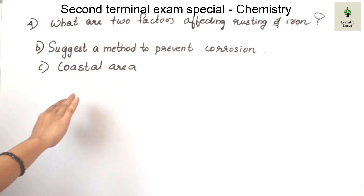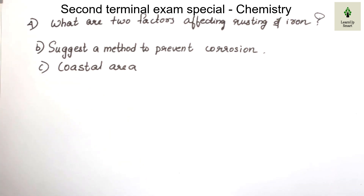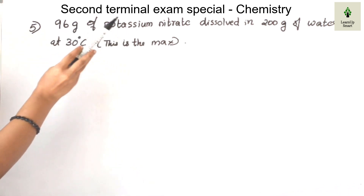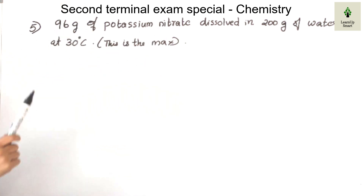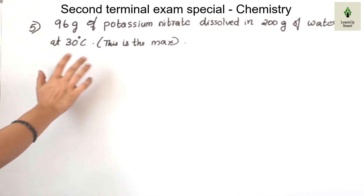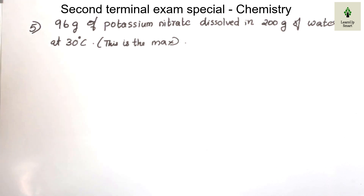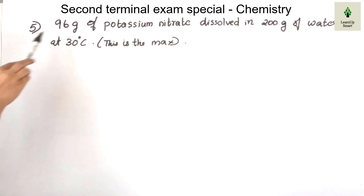In the next question: 96 grams of potassium nitrate is dissolved in 200 grams of water at 30 degrees Celsius. We have to learn solubility. This is the maximum amount of potassium nitrate that can be dissolved at 30 degrees Celsius. We will learn how to do solubility using a table. What do you mean by the term solubility?